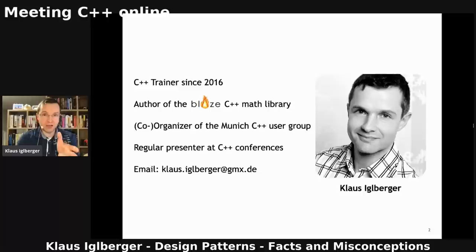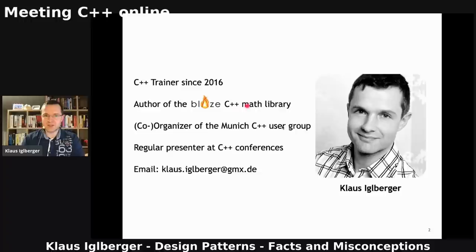And also you see a lot of code. You learn from code, discuss code, and I feel this is pretty interesting. It's not apparently enough C++ for me — I'm also writing C++ on my own. So I'm an author of the Blaise C++ Math Library, and I'm actually organizing a competing user group — of course, it's a friendly user group, the one in Munich.